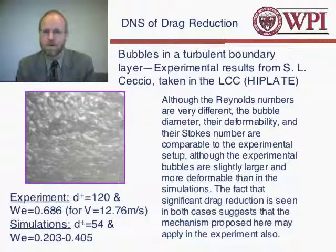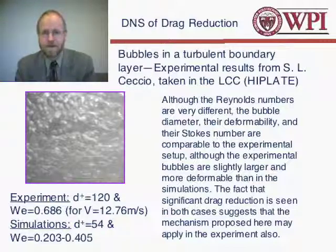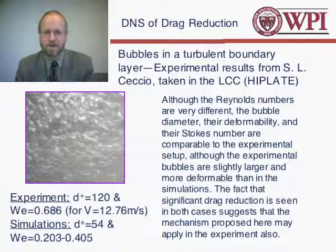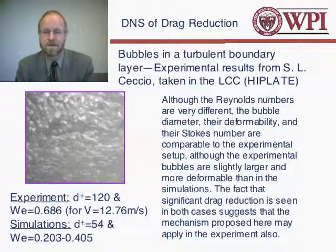Obviously the domain size in those experiments is much larger than the one we have been considering, and the Reynolds numbers are much larger. However, we have tried to select the parameters in wall units in such a way that the results are actually comparable. Given the fact that it is only the bubbles very close to the wall that have any impact on the flow, the assumption that there is some relation is not completely unfounded. The bubble sizes Sessio has been looking at are a little bit larger — about 100 wall units — whereas ours are only about half of that, selected in part because we don't want the bubbles to reach across half the channel.